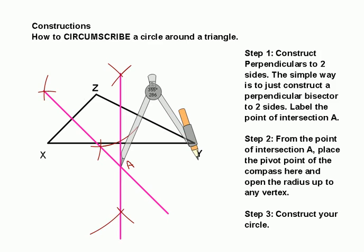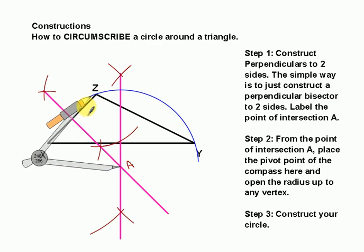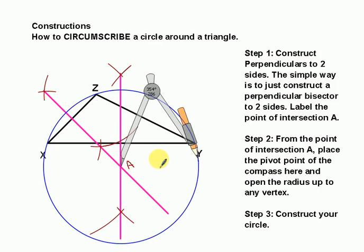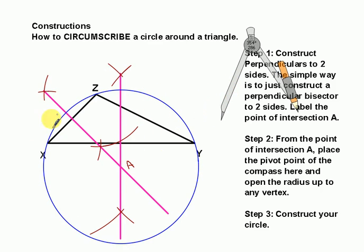Let's go ahead and pick a different color so that stands out. And hopefully you will see that this is the circumscribed circle around the triangle. So this one's a little bit easier than inscribing.